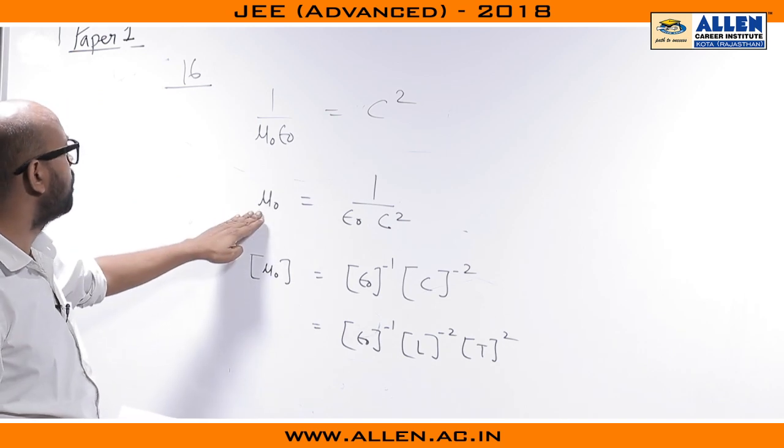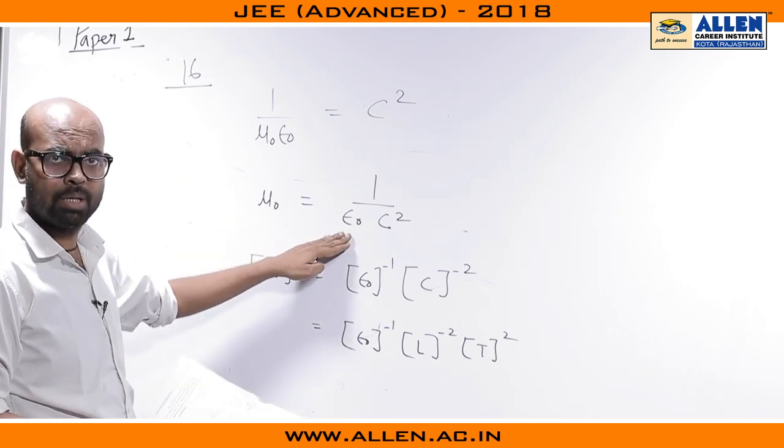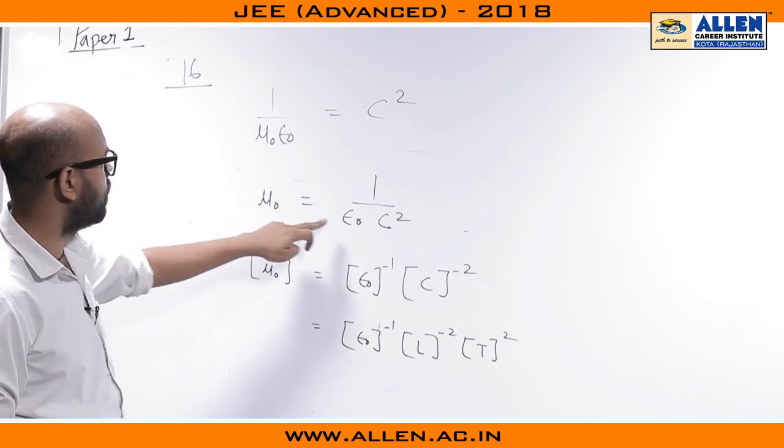By this we can write down μ₀ equals 1 upon ε₀c². Now, these 2 quantities are equal as we have said already, so their dimensional formula must be same.